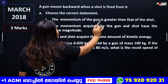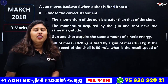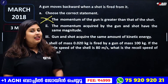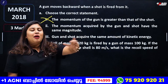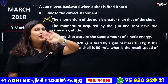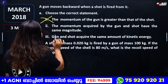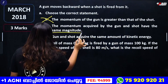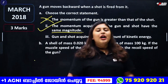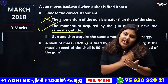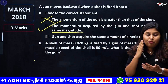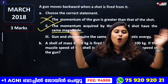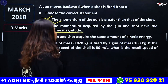An application is the recoil of a gun: a gun moves backward when a shot is fired. The momentum acquired by the gun and the shot are equal in magnitude but opposite in direction.